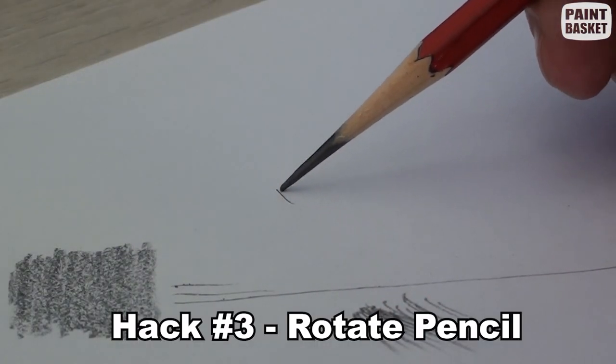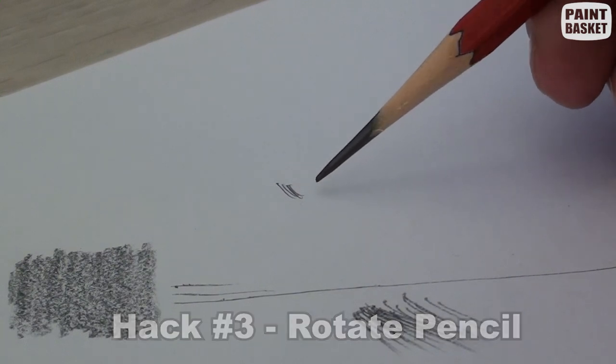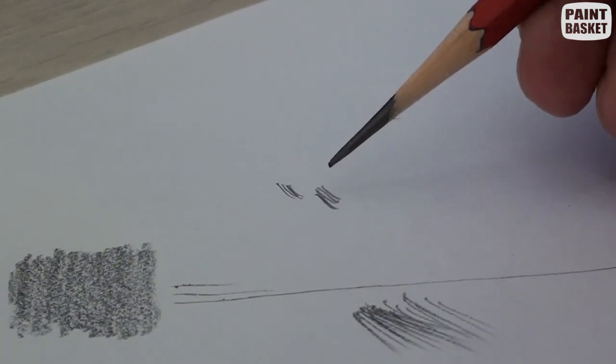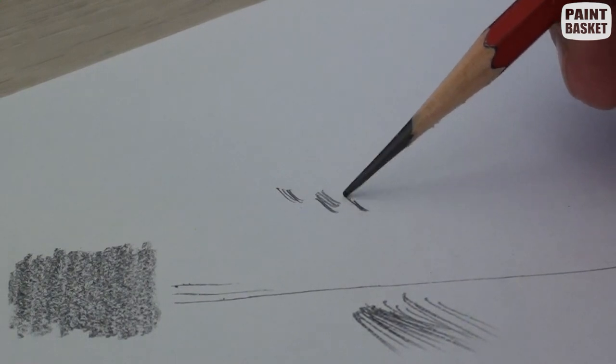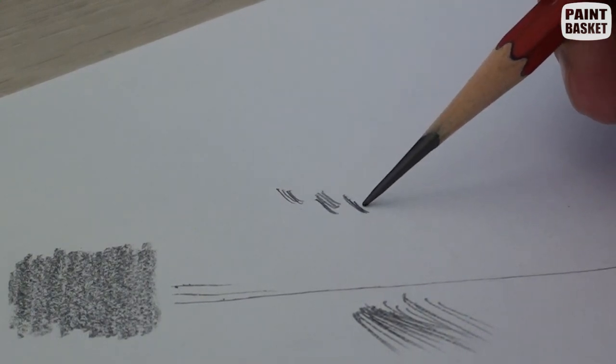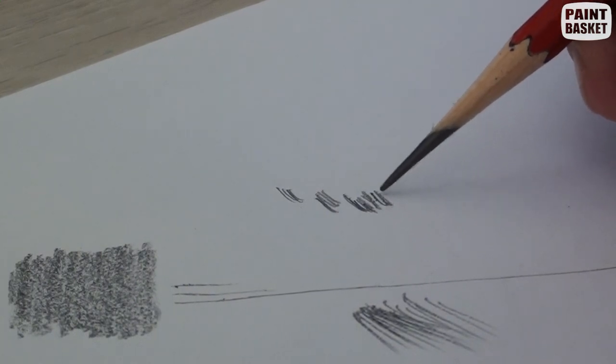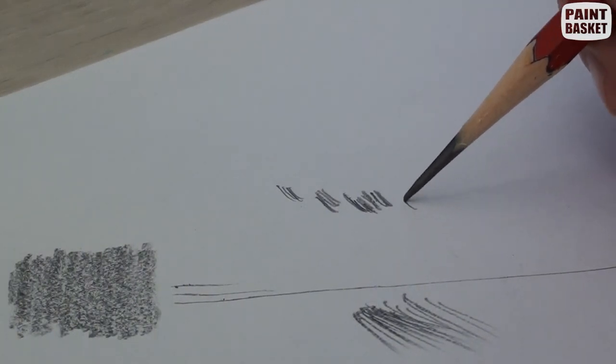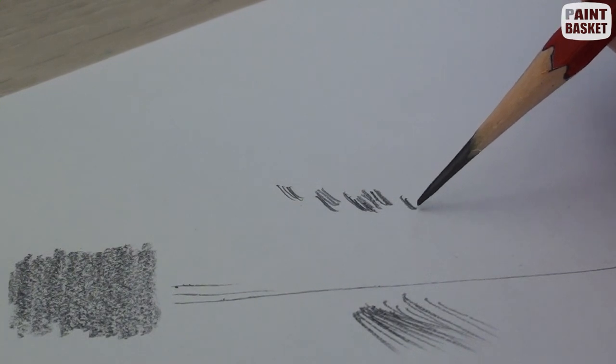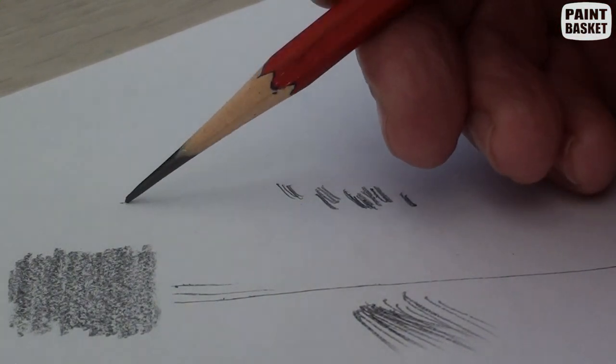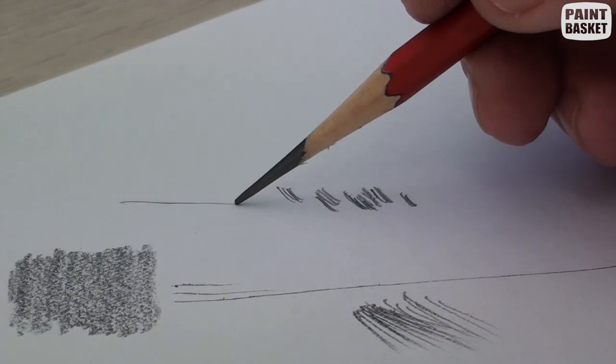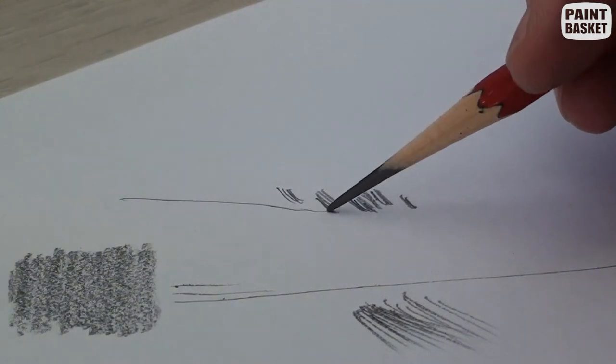When using the round point pencils, turn them in your hand as you draw. After a few strokes, rotate the pencil an eighth of a turn, then continue drawing for a few more strokes before repeating the rotating process. This way, you're basically sharpening the pencil as you draw. It keeps the tip reasonably sharp, and you can draw for ages without having to stop and sharpen the pencil.